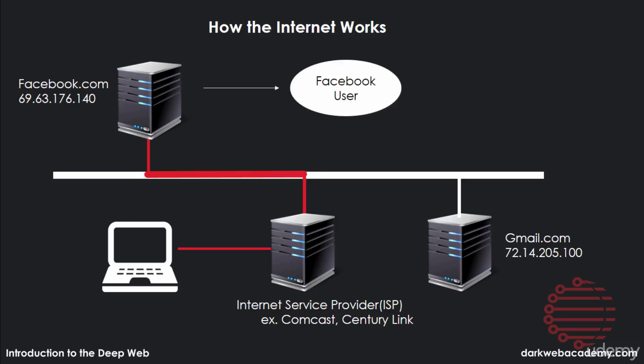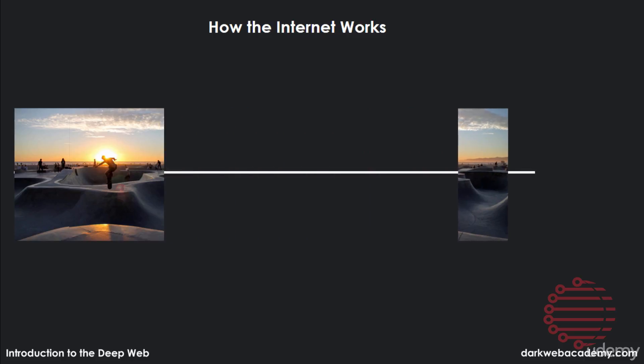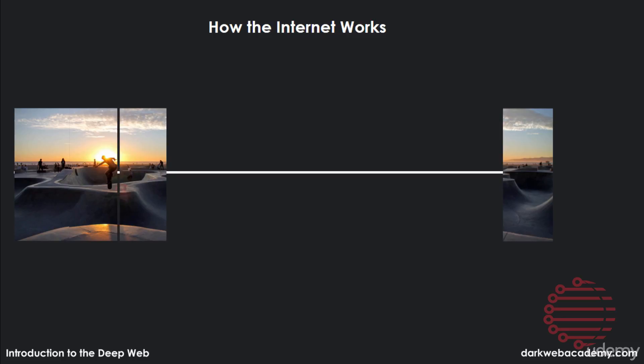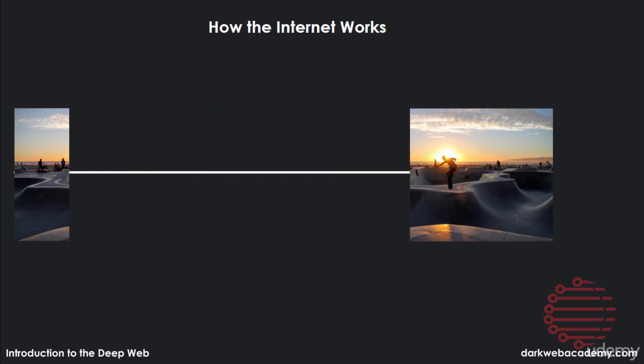But how is information over the internet actually sent? Information over the internet is sent in packets, or small sections. It basically breaks something up and then reassembles it on the other side. So if you wanted to send a picture across the internet, when you hit send, it breaks it up into pieces, sending it piece by piece until it is finally reassembled on the other side.